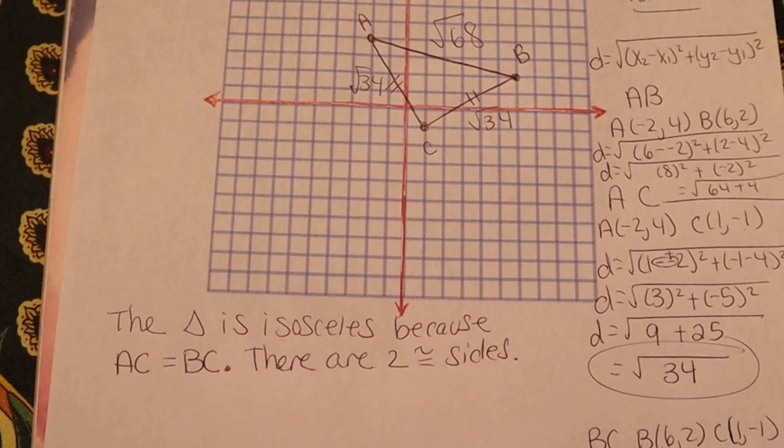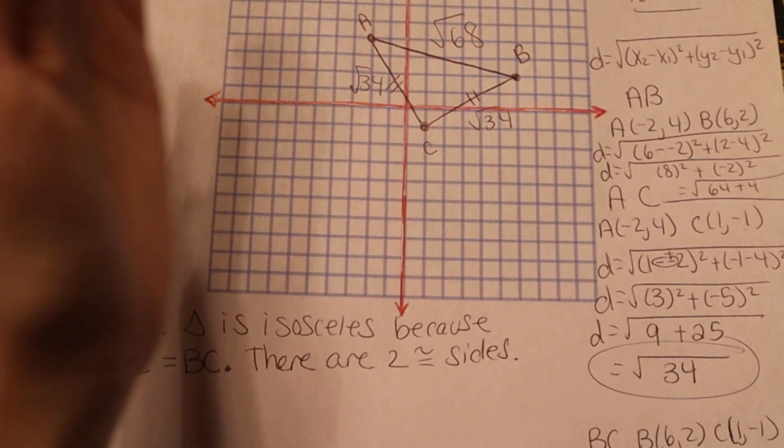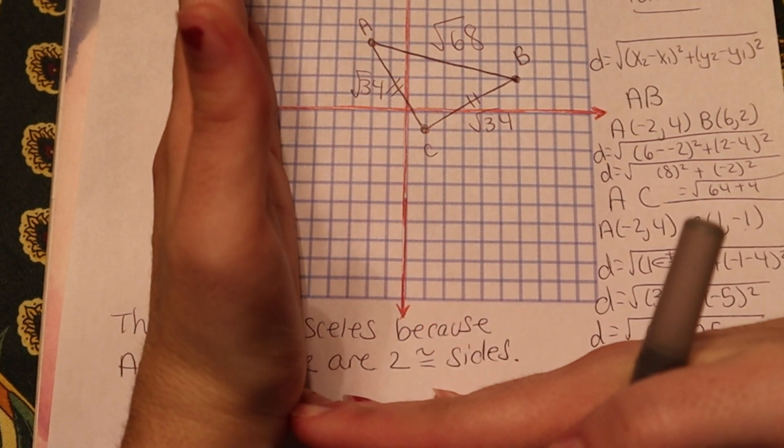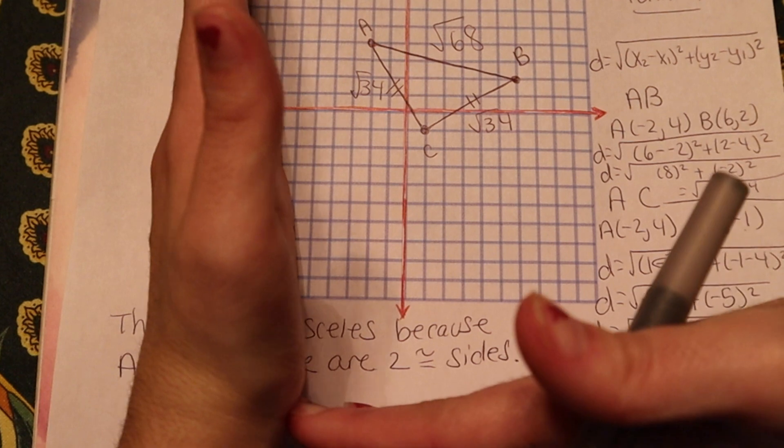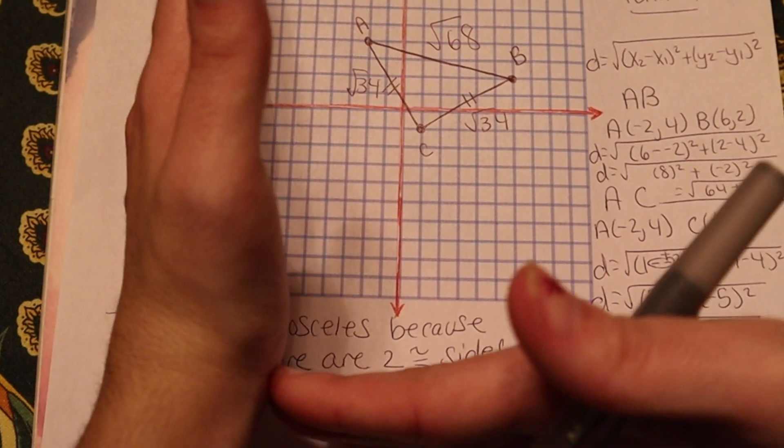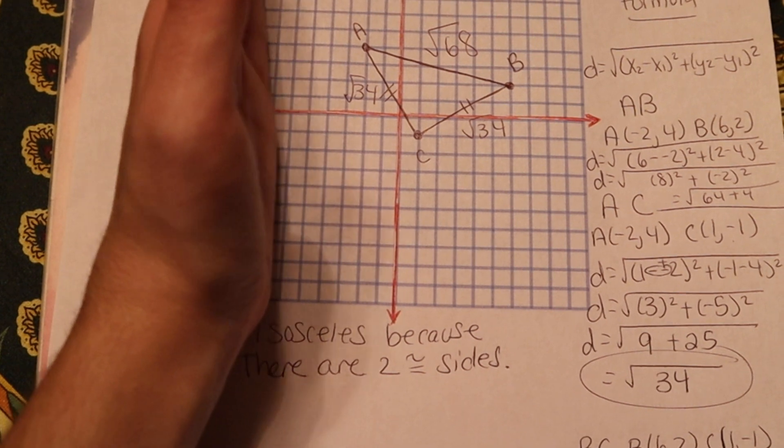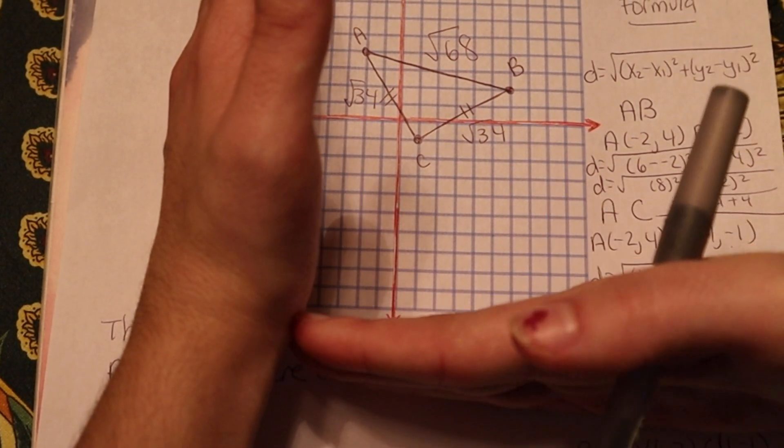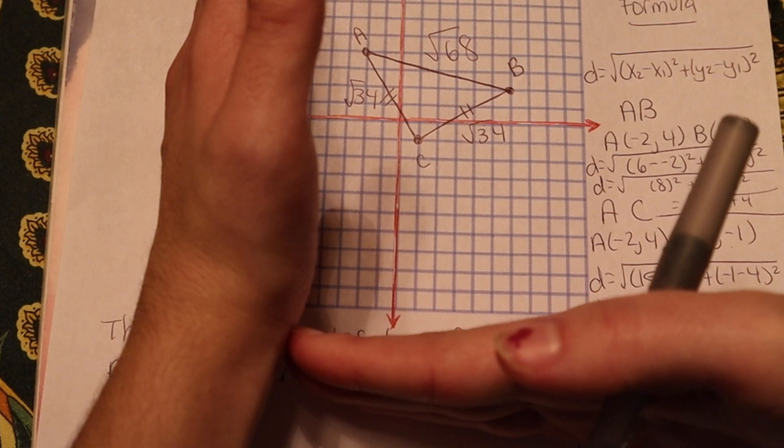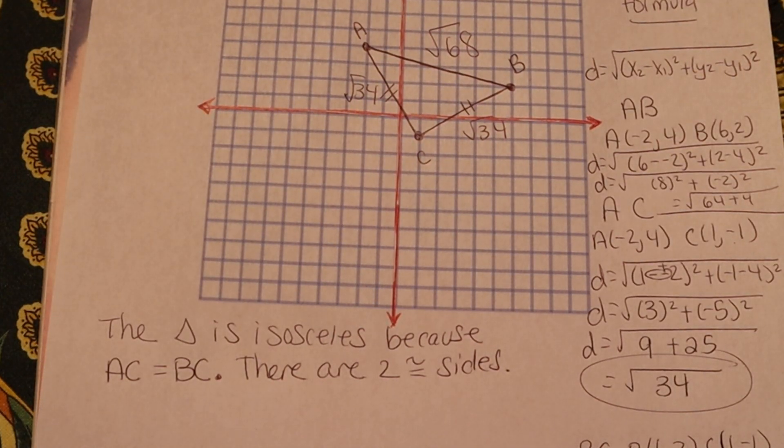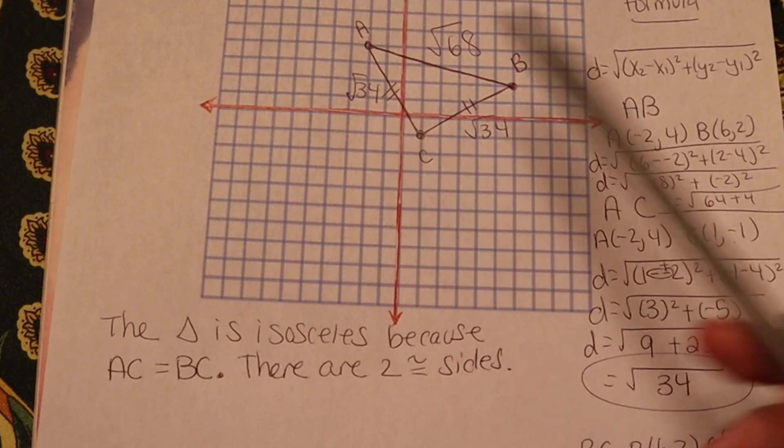And specifically, we're going to be looking for the slopes to be opposite reciprocals. The reason for that being is because if I have this line, which is vertical, and I have this line, which is horizontal, they would create a 90 degree angle right in this corner. These are opposite reciprocals. Because this line is super steep, its slope is undefined. This line is super flat, its slope is zero. These are opposites of one another. That's how you make a right angle. So I'm going to check and see if these are opposite reciprocals.